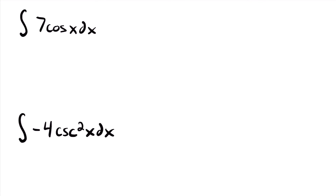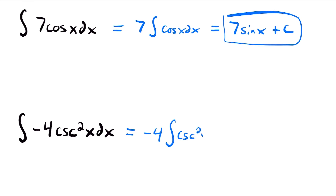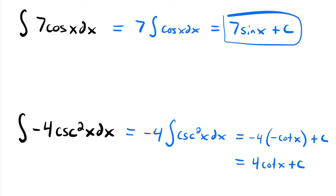Let's look at two quick examples. First, the integral of 7 cosine x dx: pull the 7 outside to get 7 times the integral of cosine x dx. Since the integral of cosine x is sine x, this equals 7 sine x plus C. Second, the integral of negative 4 cosecant squared x dx equals negative 4 times the integral of cosecant squared x dx. The integral of cosecant squared x is negative cotangent x, so this equals negative 4 times negative cotangent x plus C, which simplifies to positive 4 cotangent x plus C.